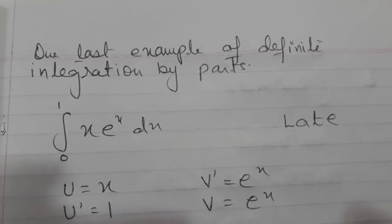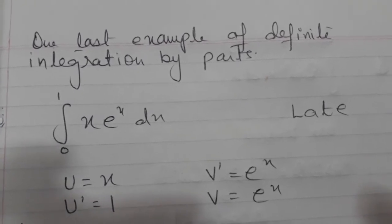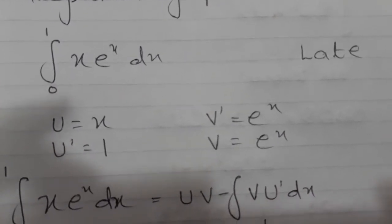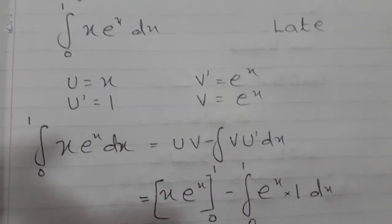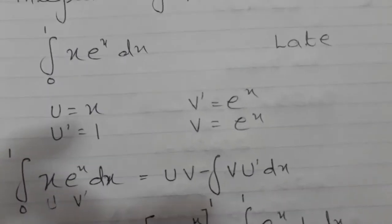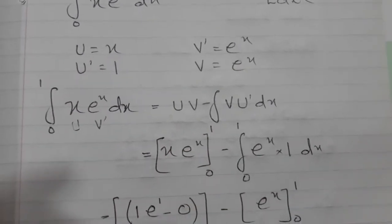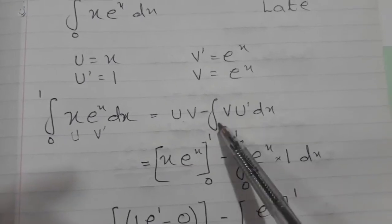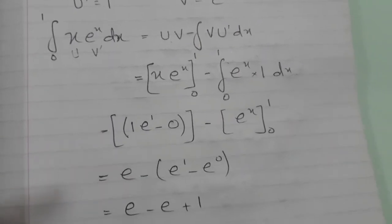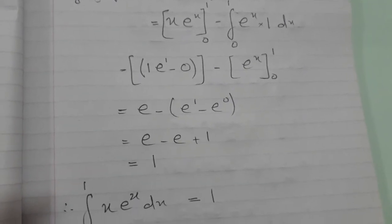Now let's see the last example — definite integration by parts. Taking the two functions by priority from LATE, algebra is given priority over exponential. So my u is x and my v' is the exponential function. I integrate and differentiate accordingly. Applying in the formula, I substitute the values, applying the limits on this part and on here too. Then very simple integration follows, which all of you already know. So now this is the end of the explanation of integration.